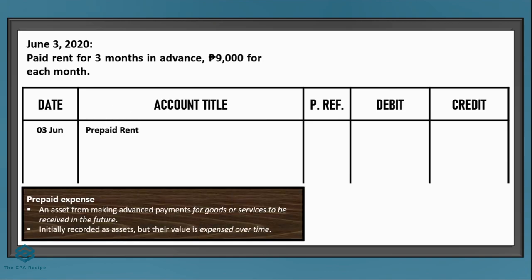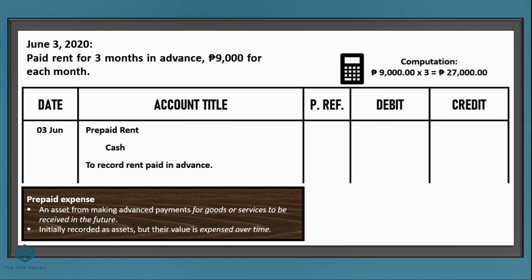Prepaid means paid in advance. This is an asset because you have the right to use the rented property for a duration, and that is an economic benefit. Since we paid cash, we need to reduce cash — we credit cash. Don't forget to add the explanation; it just needs to convey the nature of the transaction. The amount is 9,000 per month for 3 months, for a total of 27,000 pesos. Put that under the debit and credit columns.